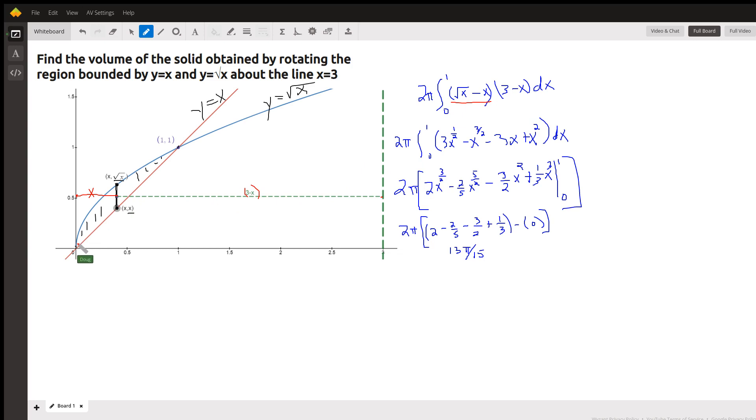And we're integrating from 0 to 1 along the x-axis because our typical shells are like that. So to actually evaluate this definite integral, you probably have to use FOIL to multiply these two binomials together. You get something that looks like that.